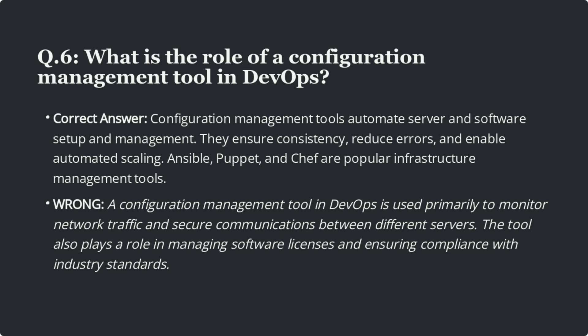Question 6: What is the role of a configuration management tool in DevOps? The correct answer is configuration management tools automate server and software setup and management. They ensure consistency, reduce errors, and enable automated scaling. Ansible, Puppet, and Chef are popular infrastructure management tools. Wrong answer: A configuration management tool is used primarily to monitor network traffic and secure communications between servers, and manages software licenses and compliance — this is absolutely wrong.